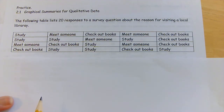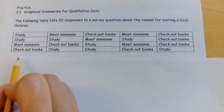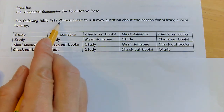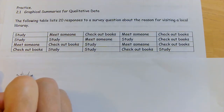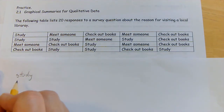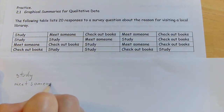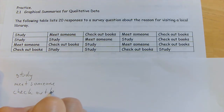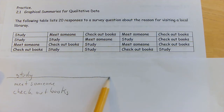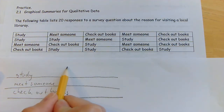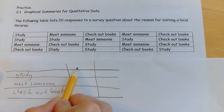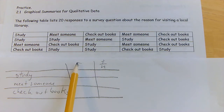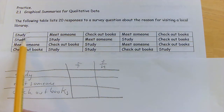Now we're going to construct a frequency distribution from qualitative data. A total of 20 responses to a survey are listed — if I wasn't told there are 20, I'd literally just count and there are 20. The question asked was: what is your reason for visiting the local library? We're going to find the frequency in each category by counting. For 'study': one, two, three, four, five, six, seven, eight — so 8 out of the total 20.